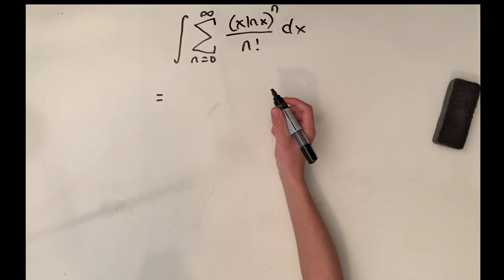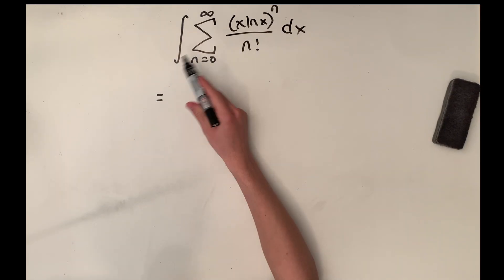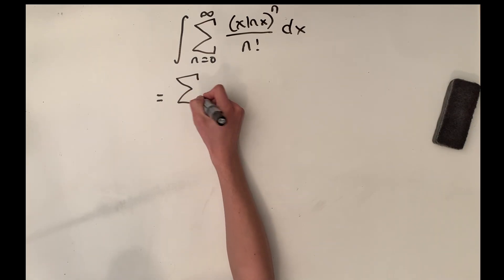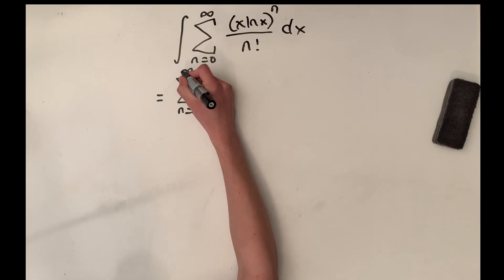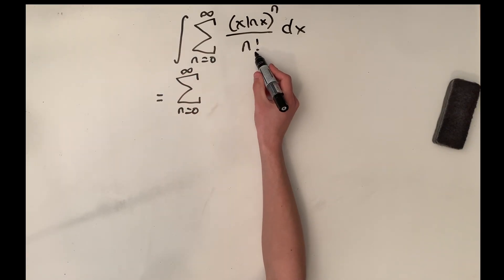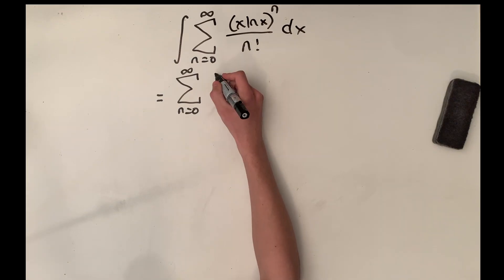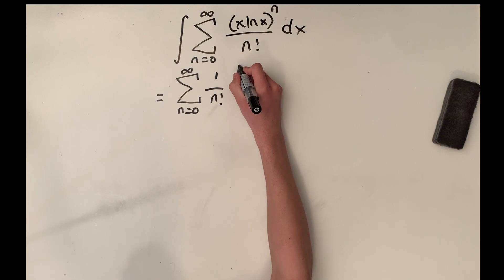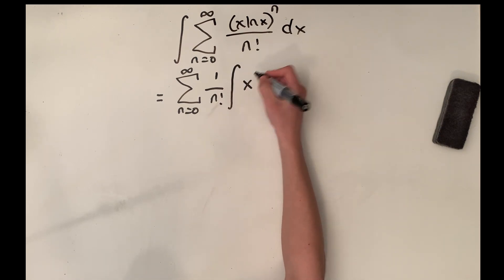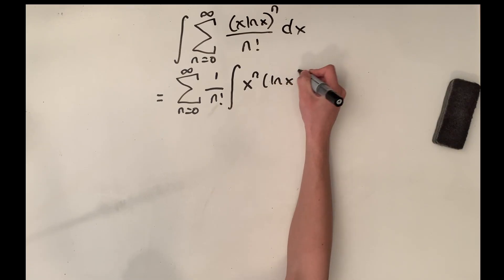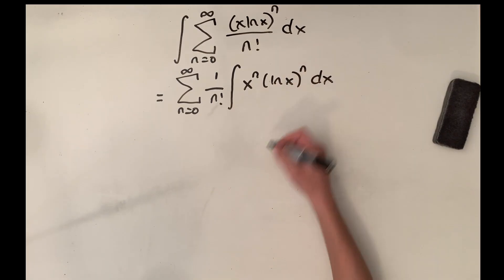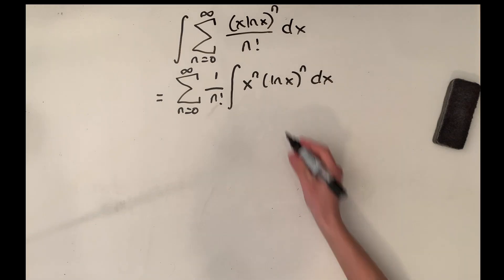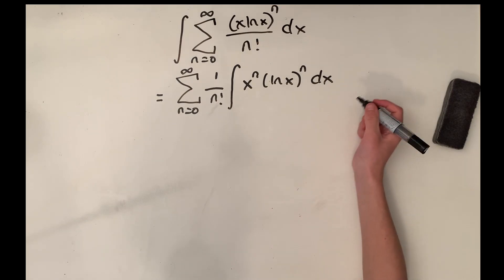Because our function is continuous and we have an integral of a summation, we can interchange the limits. So we have the sum from n equals zero to infinity, and we can bring the 1 over n factorial outside of the integral since it is a constant, multiplied by the integral of x to the n times ln(x) to the n with respect to x. Now we want to try and eventually make this integral some variation of the gamma function.